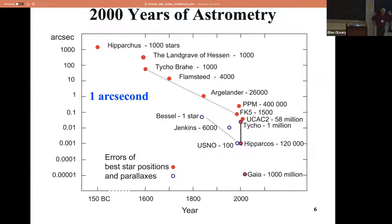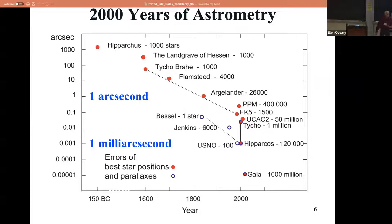Arc seconds for positions, milli-arc seconds for parallaxes from the ground - we can do one milli-arc second parallax from the ground, and maybe up to five or ten times better if you try really hard. But getting beyond a milli-arc second from the ground is virtually impossible unless you work really hard, maybe observing for 20 or 30 years to beat down the errors.